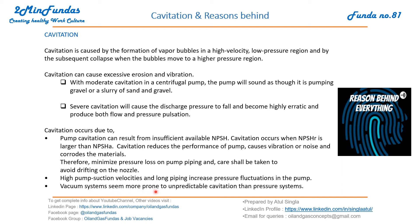Vacuum systems seem more prone to unpredictable cavitation than pressure systems — cavitation is more commonly found in vacuum systems. So, to summarize: cavitation occurs due to bubble formation in low pressure regions, and we can avoid it by minimizing the suction length. That's why we go for a straight length in pump suction lines, which will be discussed in coming slides.